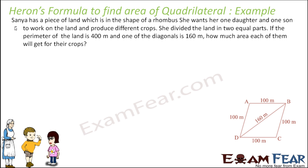Let's take one example. Sandhya has a piece of land which is the shape of a rhombus — rhombus means all sides are the same. She wants her one daughter and one son to work on the land and produce different crops. So she divided the land into two equal parts. The perimeter of the land is given as 400 meters, and if the perimeter is 400 meters, each side will be 100 meters because all sides are equal.